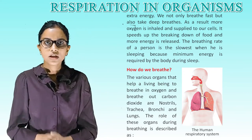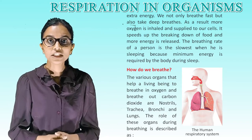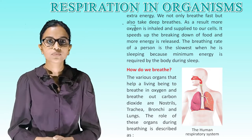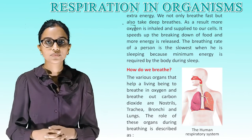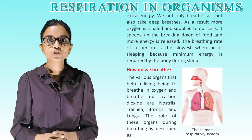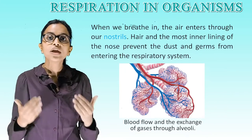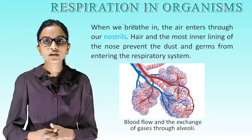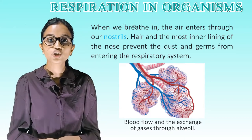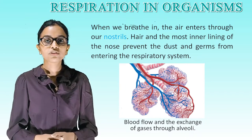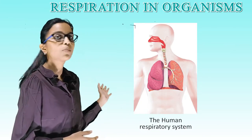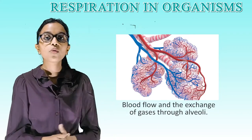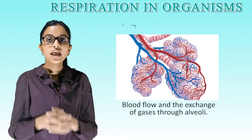How do we breathe? The various organs that help a living being to breathe in oxygen and breathe out carbon dioxide are nostrils, trachea, bronchi, and lungs. When we breathe in, air enters through our nostrils. Hairs and the moist inner linings of the nose prevent dust and germs from entering the respiratory system. This is a diagram of the human respiratory system, and this is the diagram of blood flow and the exchange of gases through alveoli.